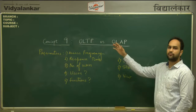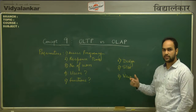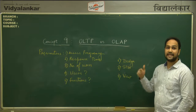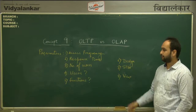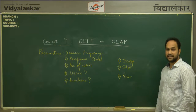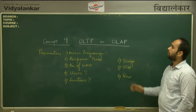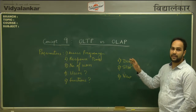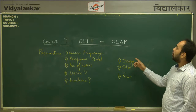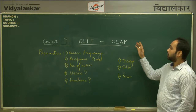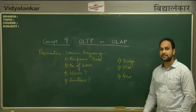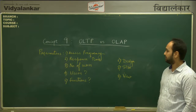The fifth parameter is functions. The function of OLTP is day-to-day operations, whereas the function of OLAP is analytical processing. The sixth parameter is design. The design of OLTP is based on ER diagrams, whereas the design of OLAP systems uses schemas like star schemas, snowflake schemas, etc.